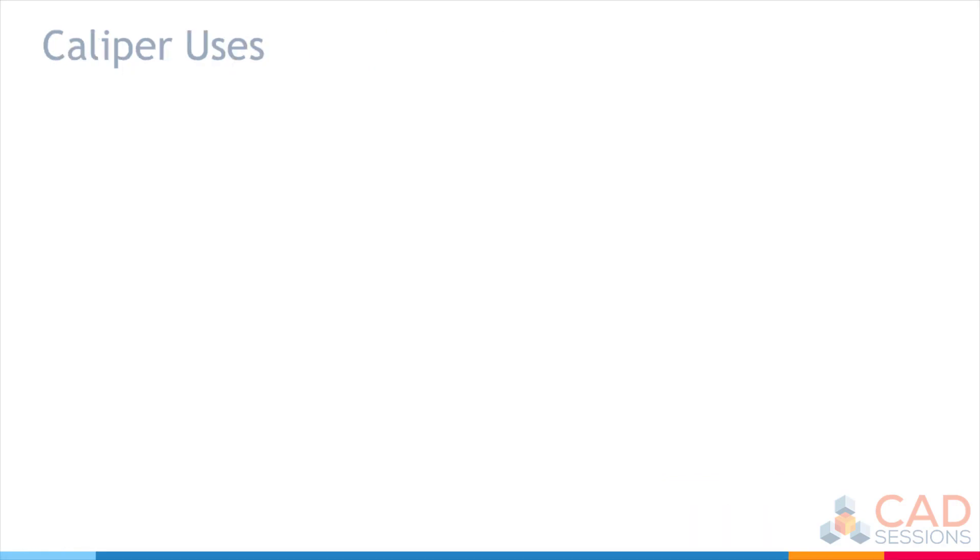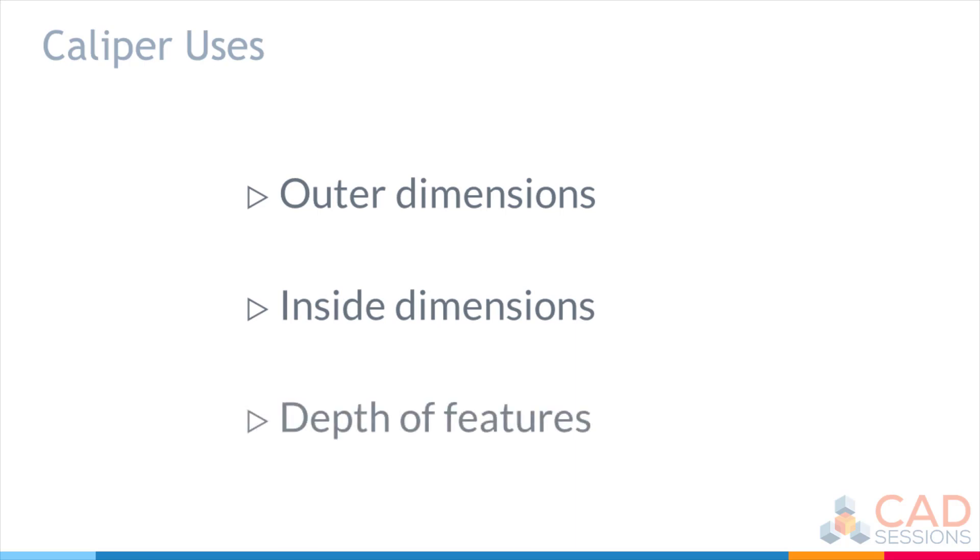So a little bit about calipers. Most commonly, calipers are used for measuring the outside dimension of an object. Second most common, they can also be used to measure inside dimensions. And third, they can also be used to measure the depth of features such as holes.